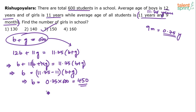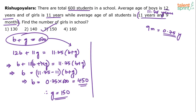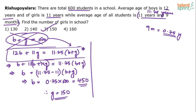You can cut out at least 2-3 steps from this solution — you don't have to write everything. The equation b plus g equals 600 is not really required. The most important equation is 12b plus 11g equals 11.75 times (b plus g). The key trick is to rewrite 12b plus 11g as b plus 11 times (b plus g).